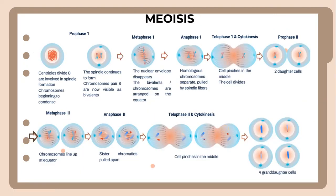Let's look at the process of meiosis. In the process of meiosis, there are several steps from phase one to phase two. During prophase one, centrioles divide and are involved in spindle formation and the chromosomes begin to condense. The spindle continues to form and the chromosomes pair and are now visible as bivalents. At metaphase one, the nuclear envelope disappears and the bivalents are arranged on the equator, as shown in the diagram.